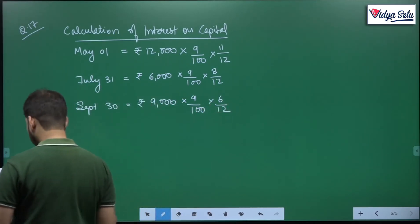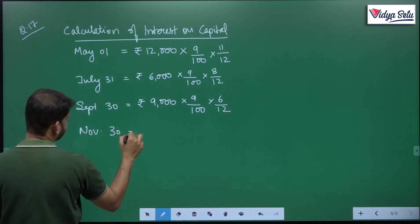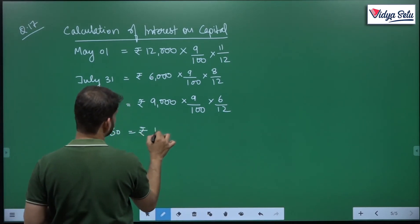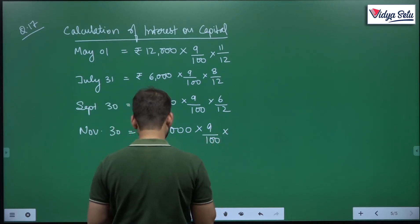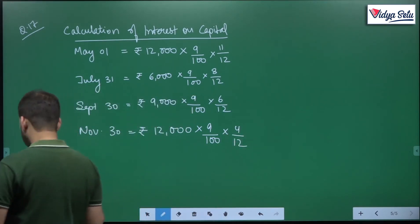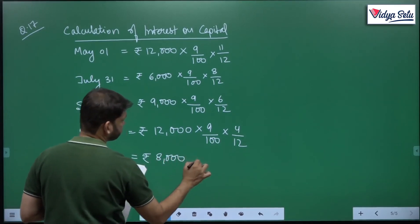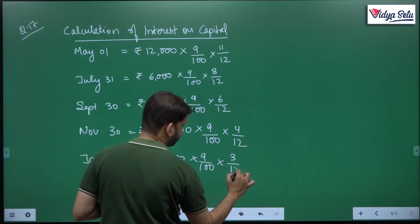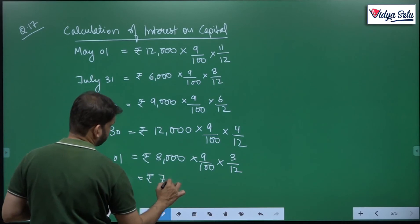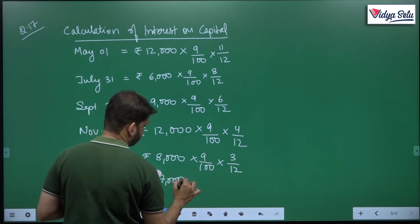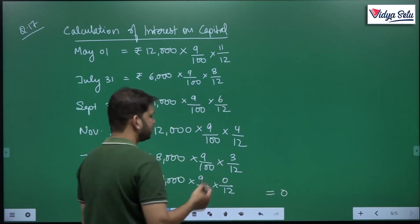Then he withdrew on 30th September rupees 9,000 — which he could use only for 6 months. Then on 30th November rupees 12,000 — there is no shortcut way to do this, we just apply the formula — for 4 months. Then January 1, rupees 8,000 for 3 months. And the last one is for 0 months — anything multiplied by 0 is 0.